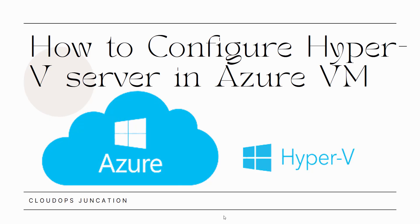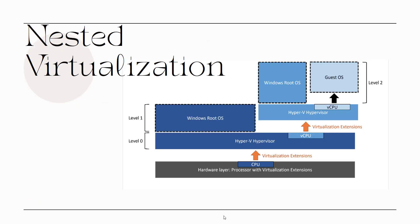Welcome back. In this video we are going to learn how we can configure Hyper-V in an Azure VM. This can be done by nested virtualization. A nested virtualization-enabled machine allows Hyper-V to expose hardware virtualization extensions to its virtual machine. The virtual machine can then install its own Hyper-V and run its own guest machines. In this scenario, the level 2 is our virtual machine on Azure and level 1 is the machine running on Azure.